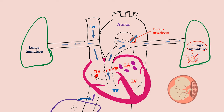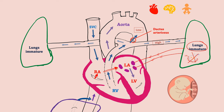Through the ductus arteriosus, the blood goes to the aorta, because the pressure in the pulmonary artery is greater than in the aorta. Meanwhile, the pulmonary veins drain into the left atrium, but since the lungs are not functional, this blood is deoxygenated. It mixes in the left atrium and drains into the left ventricle. When the left ventricle contracts, the blood reaches the aorta. First, the heart, brain, and upper body are supplied with oxygenated blood. After that, the blood from the ductus arteriosus mixes with this blood and is then supplied to the whole body.